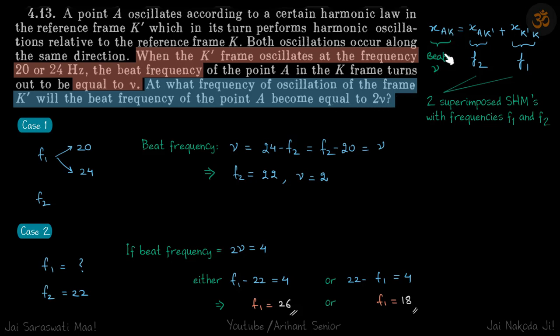At what f1 will this become 2ν? Using the first part, the beat frequency is ν, so ν = 24 - f2 = f2 - 20. The beat frequency is the same for both 20 and 24, which means f2 must lie exactly between them. So f2 = 22, which gives ν = 2.